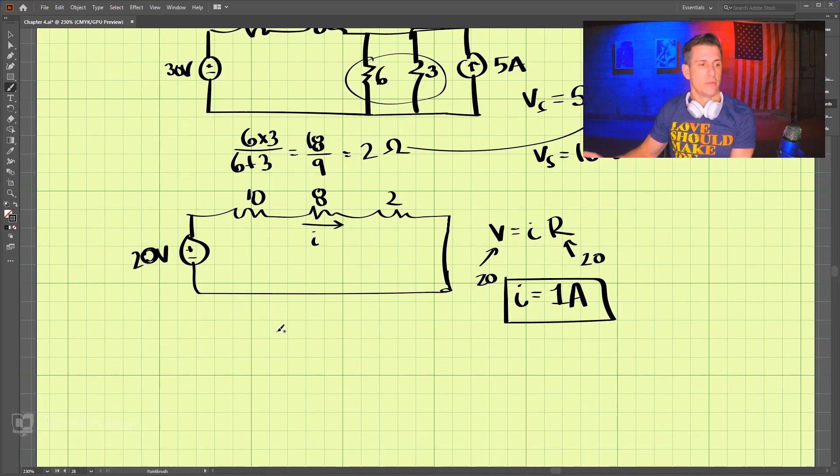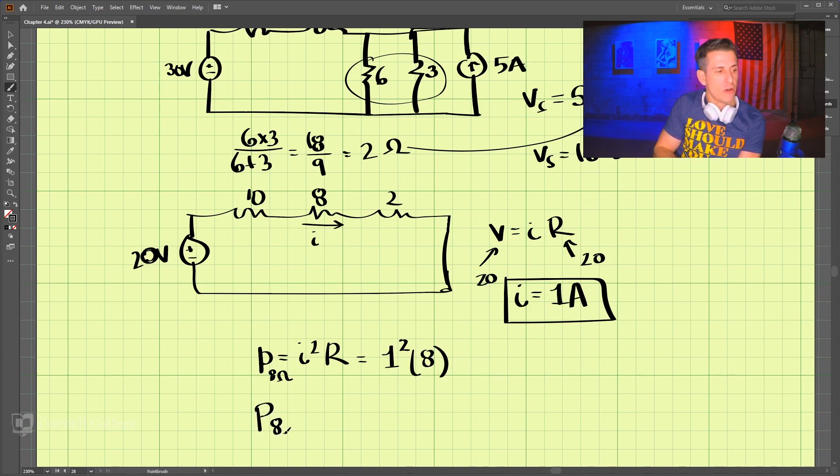In addition, we want the power for the 8-ohm resistor. That is going to be equal to I squared times R. We have I, which is 1, squared times R, which is 8. So the power for the 8-ohm resistor being absorbed is 8 watts.